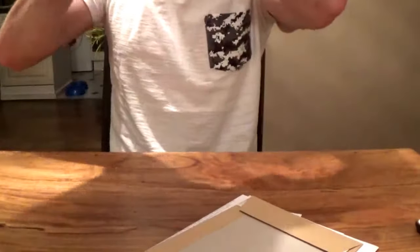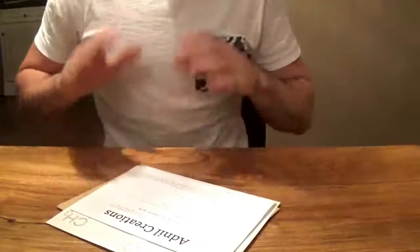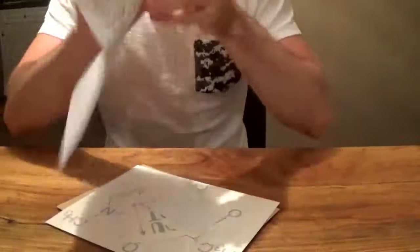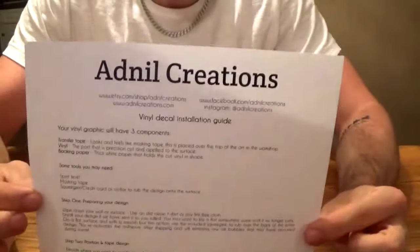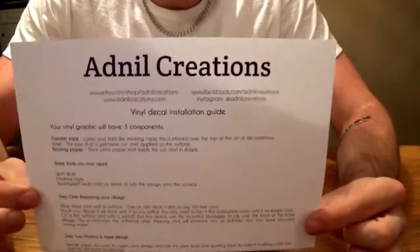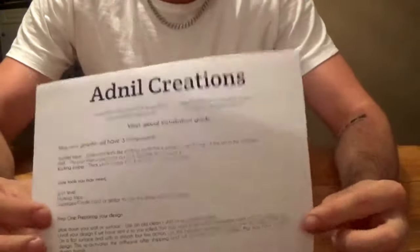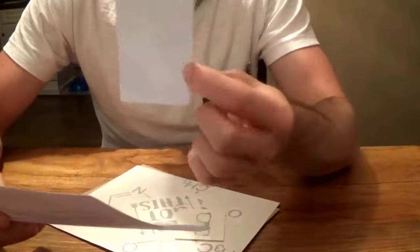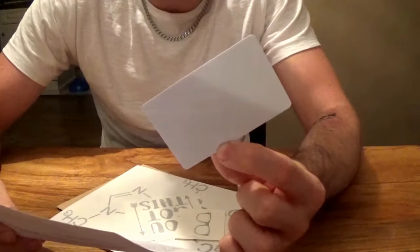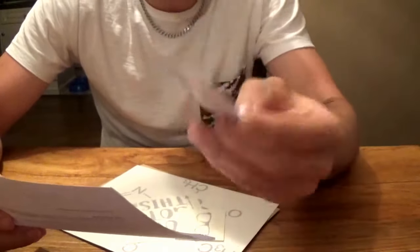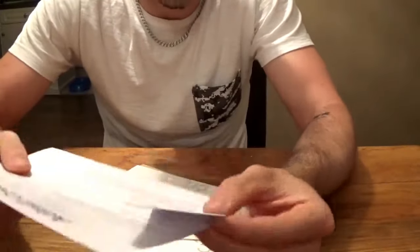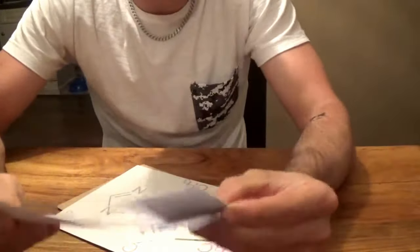Right here, starting off, we have the installation guide on how to apply your vinyls, which I think is quite handy because not many people include that. And it also includes a credit card type to rub the design onto the surface. Again, not many people include this, so that's quite handy to know and how to use. So let's see what we've got sent.